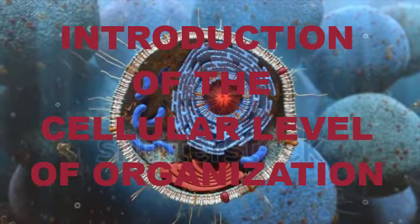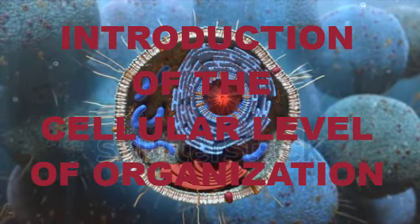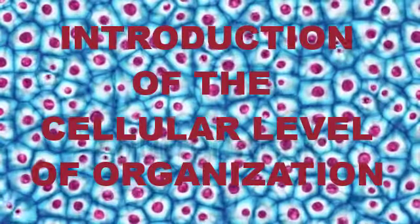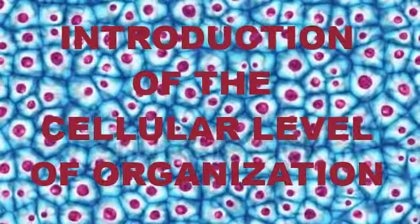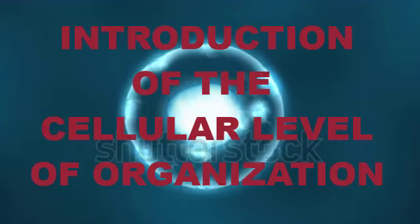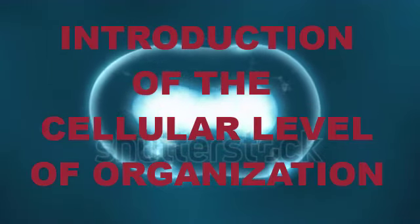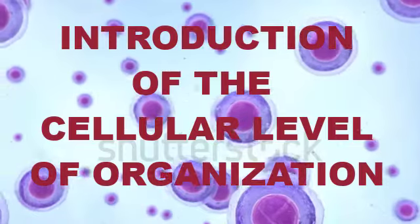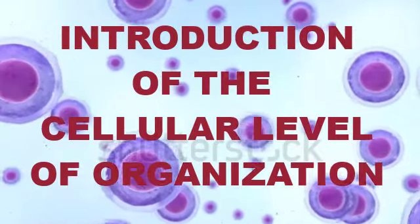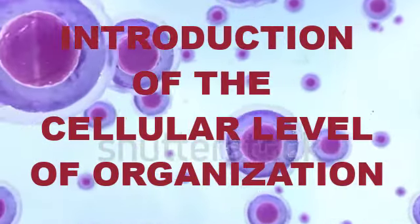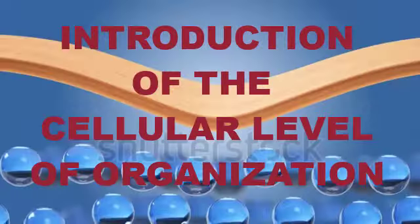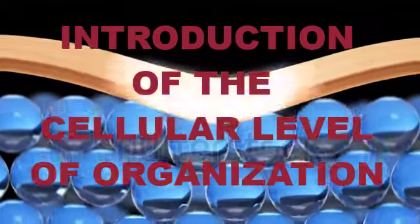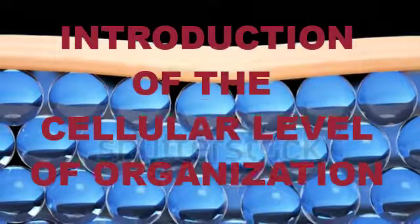The cell is also the smallest part to which an organism can be reduced that still retains the characteristics of life — it is the basic unit of life. Cells also produce and secrete various molecules that provide protection and support of the body. For example, bone cells produce a mineralized material to make bone a hard tissue that protects vital organs and supports the weight of the body. Movement of the body also occurs because of molecules located within specific cells, such as muscle cells.